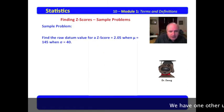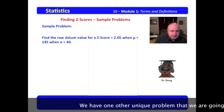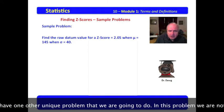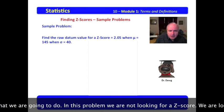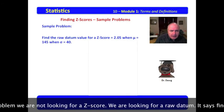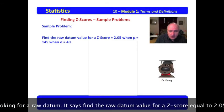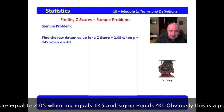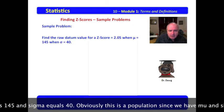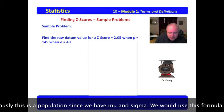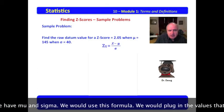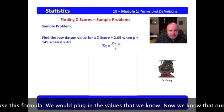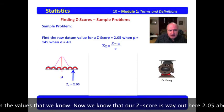We have one other unique problem that we're going to do. In this problem, we're not looking for a z-score. We're looking for a raw datum. And it says, find the raw datum value for a z-score equal to 2.05 when μ = 145 and σ = 40. Obviously, this is a population since we have μ and σ. We would use this formula. We would plug in the values that we know.